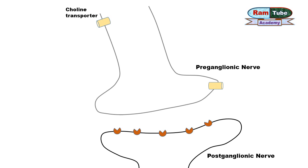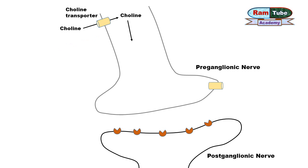Preganglionic nerve fibers are embedded with choline transporters, through which choline is actively transported inside the neuronal cell along with sodium ions. This transport can be inhibited by hemicholinium. Once choline is inside the preganglionic nerve, it reacts with acetyl-CoA in the presence of choline acetyltransferase to form acetylcholine.